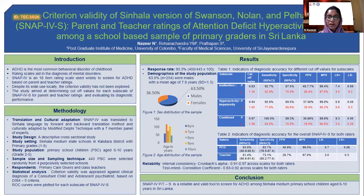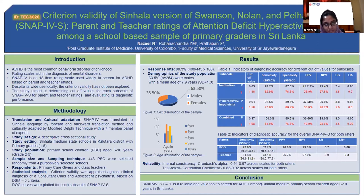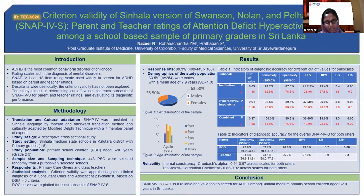Rating scales therefore aid in arriving at an objective diagnosis. SNAP-4 is an 18-item rating scale available in a single form for both parents and teachers and is used widely globally to screen for ADHD. However, despite its wide local use, the criterion validity of the scale has not been explored locally.